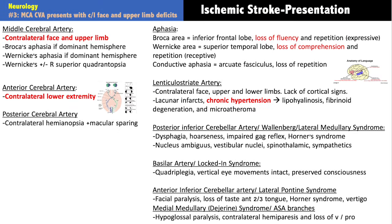All aphasia syndromes must occur in the dominant hemisphere — for most people, this means the left side. A lesion in the right inferior frontal lobe will not produce Broca's aphasia. Also note that Wernicke's area damage can cause a right superior quadrantanopia, related to Meyer's loop running through the temporal lobe — we'll explain that when discussing visual pathways. Lenticulostriate arteries supply the thalamus, basal ganglia, and internal capsule.